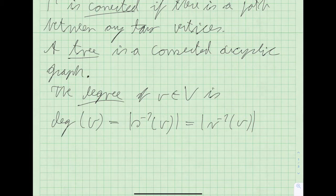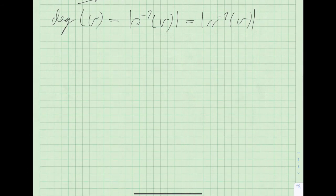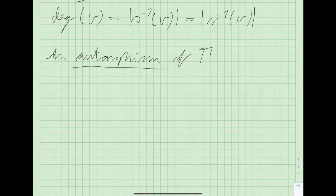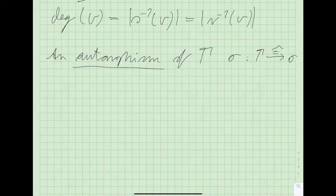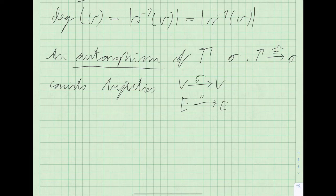We want to talk about group actions on trees, so we need actions by automorphisms. An automorphism of our graph gamma consists of two bijections: a permutation of the vertices and a permutation of the edges. I'll be a bit sloppy and denote them both by sigma.